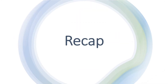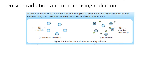Before I start my lesson, let's go through a recap. From the previous lesson, we have learned ionizing and non-ionizing radiation. Let's look at Figure 8.8. When a radiation such as radioactive radiation passes through air and produces positive and negative ions, it is known as ionizing radiation. As we can see here, the alpha particle is passing through air molecules, and those air molecules are ionized into positive and negative ions because of the alpha particle.